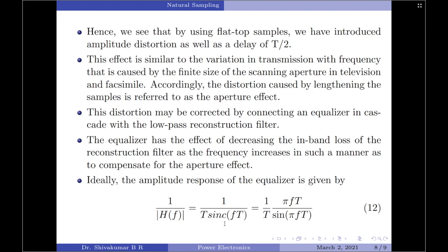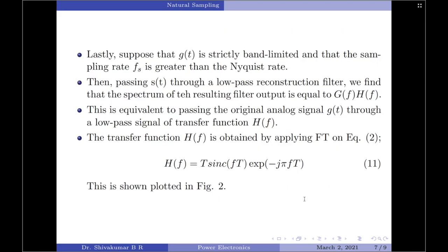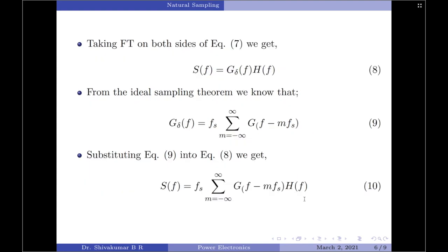Since the exponential is only a delay term, the magnitude of H(f) is simply T times sinc(fT). Since sinc(x) = sin(pi*x)/(pi*x), we write sinc(fT) = sin(pi*fT)/(pi*fT), taking pi*fT to the numerator. To conclude: flat top sampling introduces both amplitude and delay distortion; however, by including an equalizer in cascade with the low-pass reconstruction filter, this distortion can be mitigated. Thank you for watching.